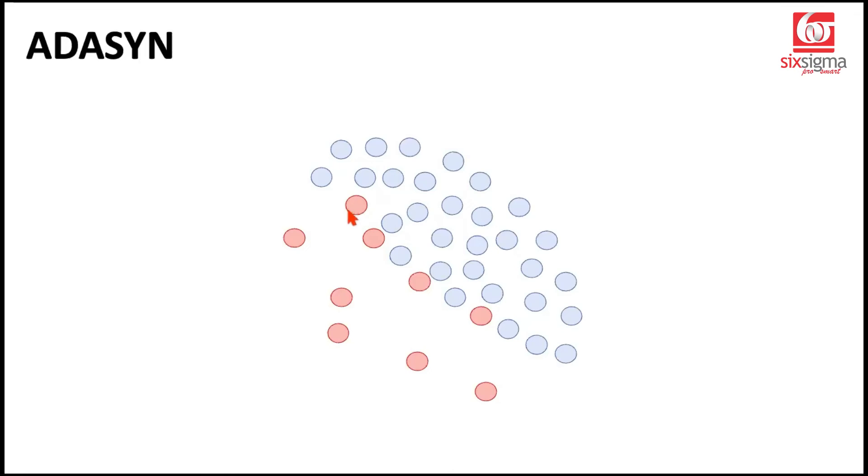For example, you can imagine this observation here being red and closer to blues is a relatively difficult observation to classify compared to this observation, which is well within the range of other reds and away from the blues, farther from the blues. So this time, when we give relatively higher weightage to the observations which are difficult to classify, we will generate synthetic records around these observations like this.